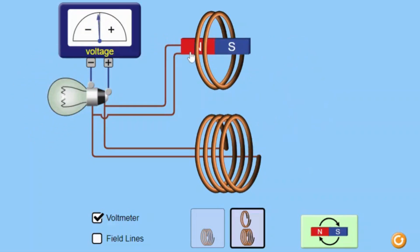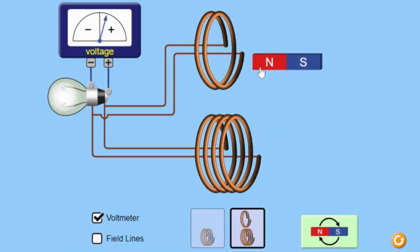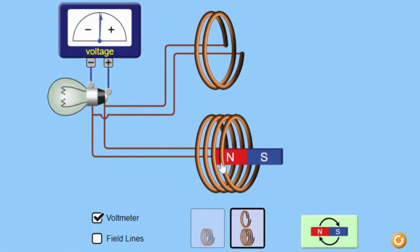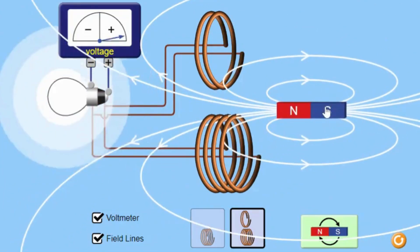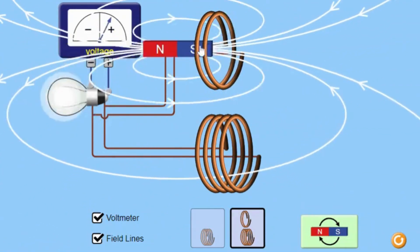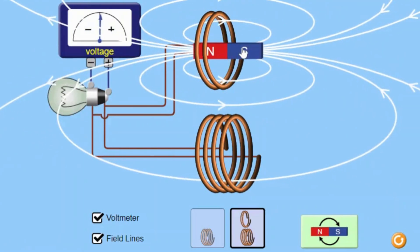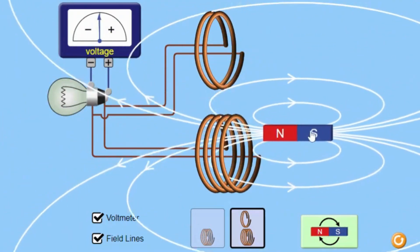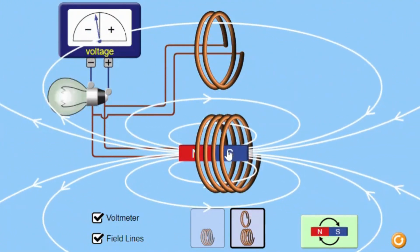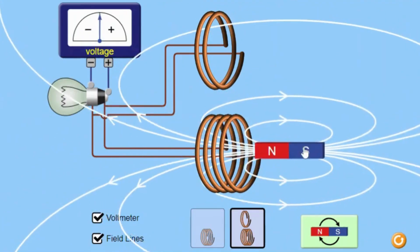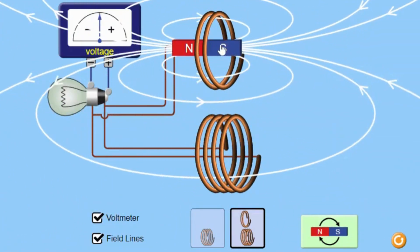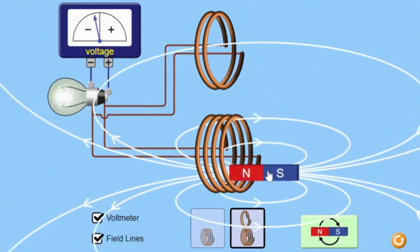The simulation provides an interactive and engaging way to learn about electromagnetic induction. Students can actively participate in the learning process by adjusting the number of coil turns and the speed of the magnet and observing the effects on the brightness of the bulb. Electromagnetic induction can be a challenging concept to understand, but the simulation provides a visual and tangible representation of these abstract concepts, making them more accessible and understandable.